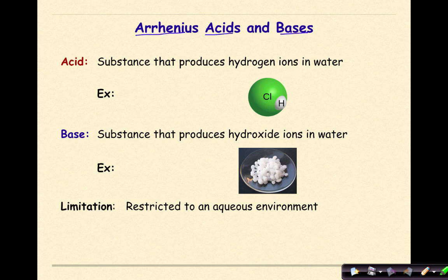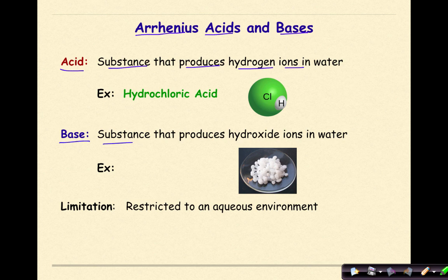Let's start off by reviewing the Arrhenius definition of acids and bases. Under the Arrhenius definition, an acid is a substance that produces hydrogen ions, or a proton, in water. An example of this would be hydrochloric acid. A base is a substance that produces hydroxide ions, OH⁻, in water. An example for that could be sodium hydroxide. The limitation of this definition is that it's restricted to an aqueous environment.